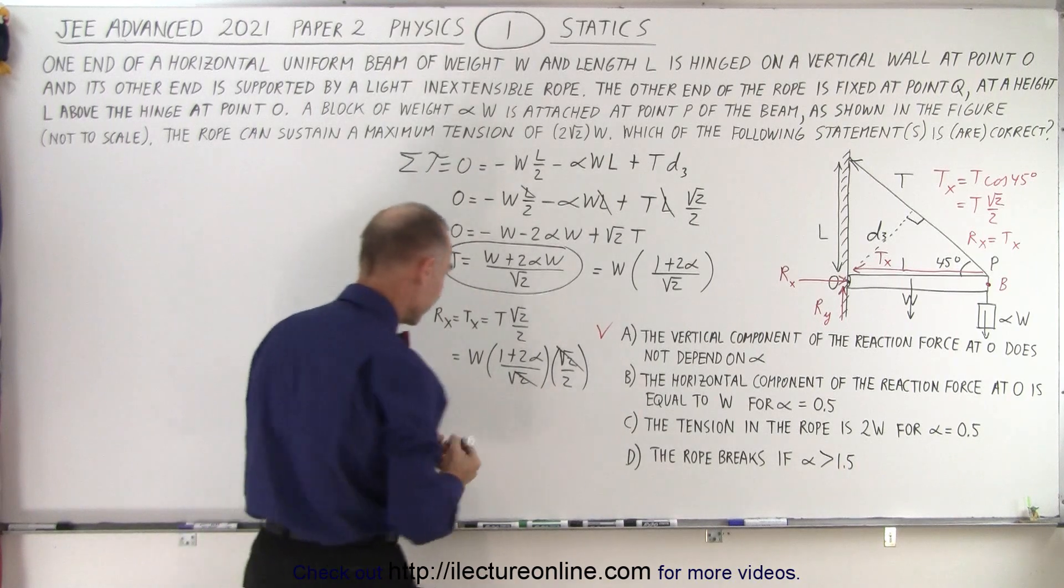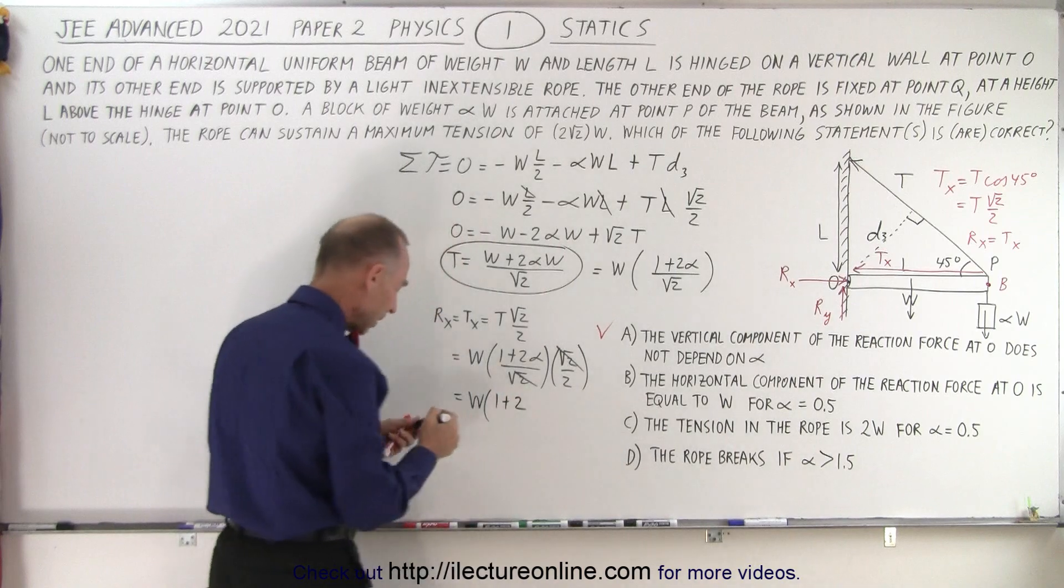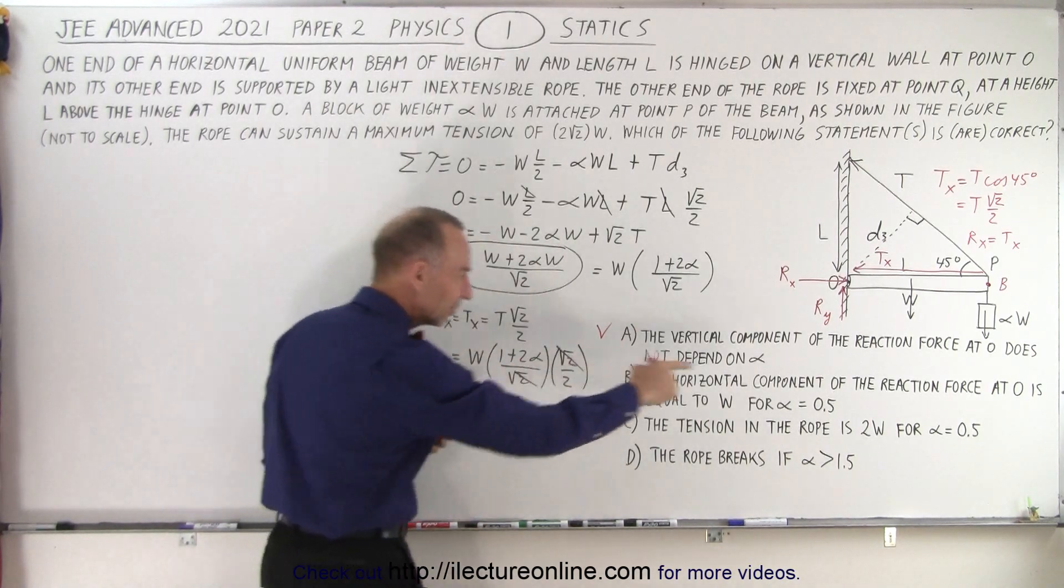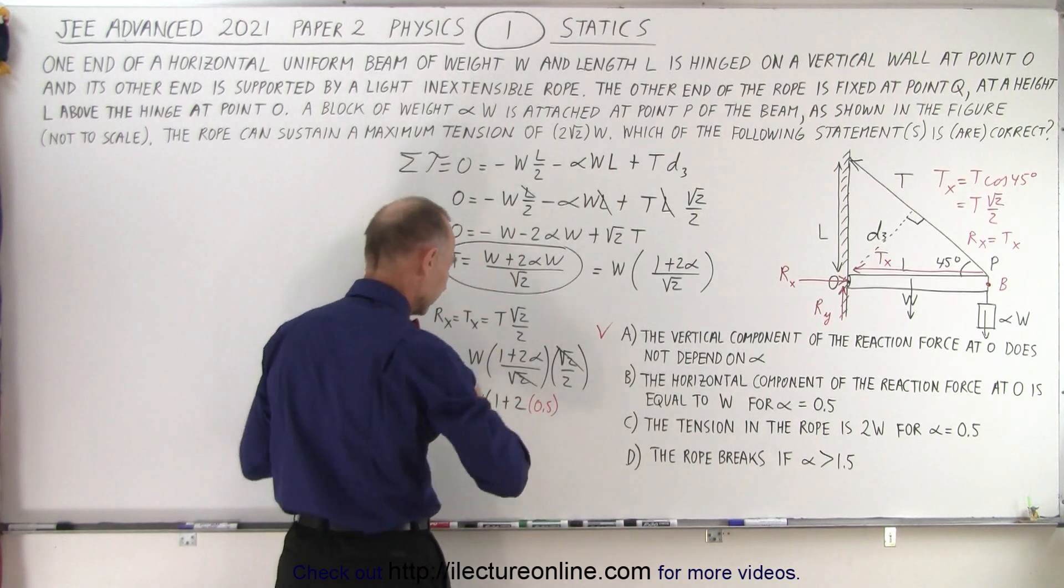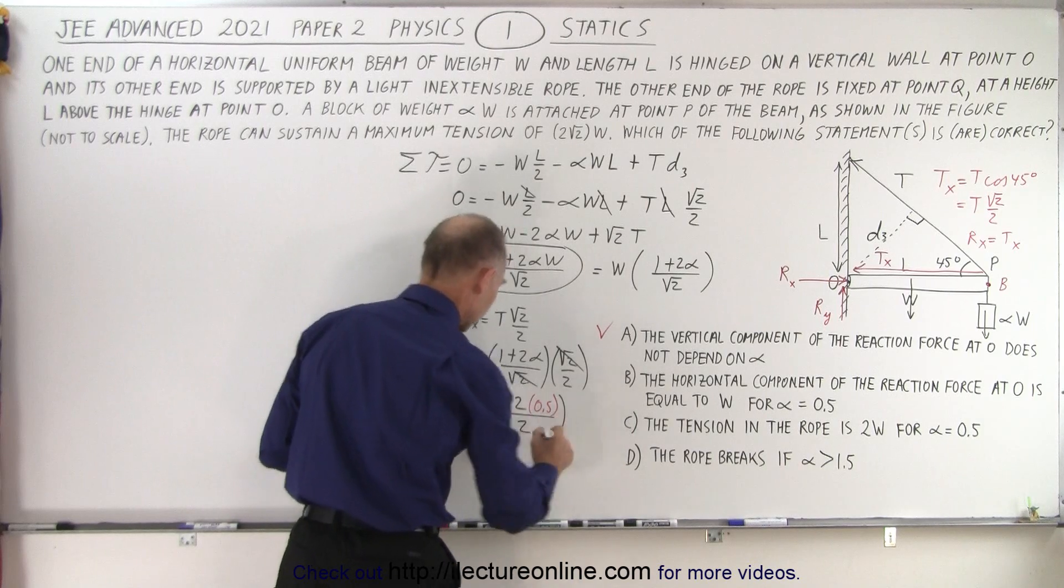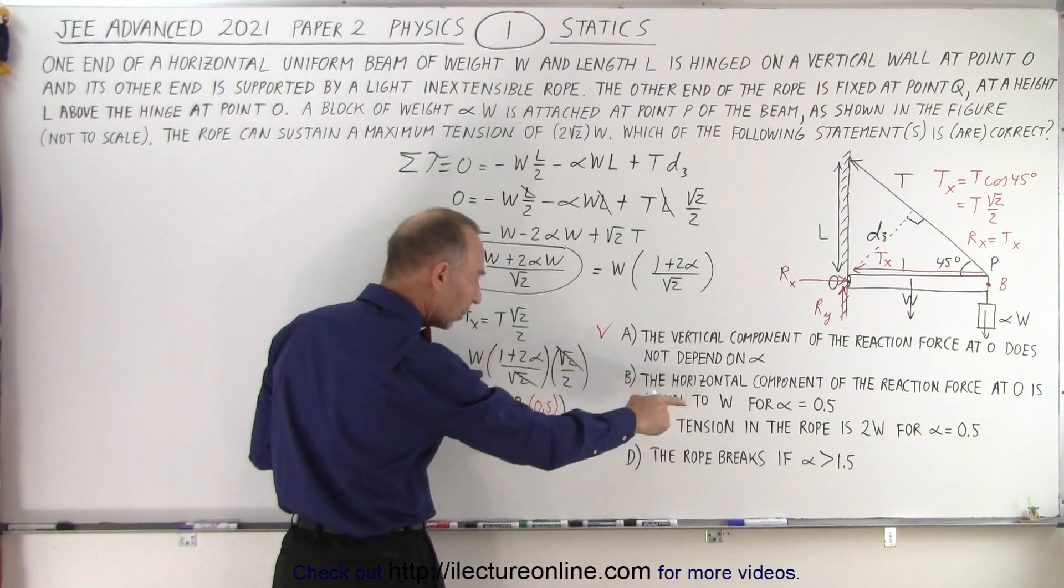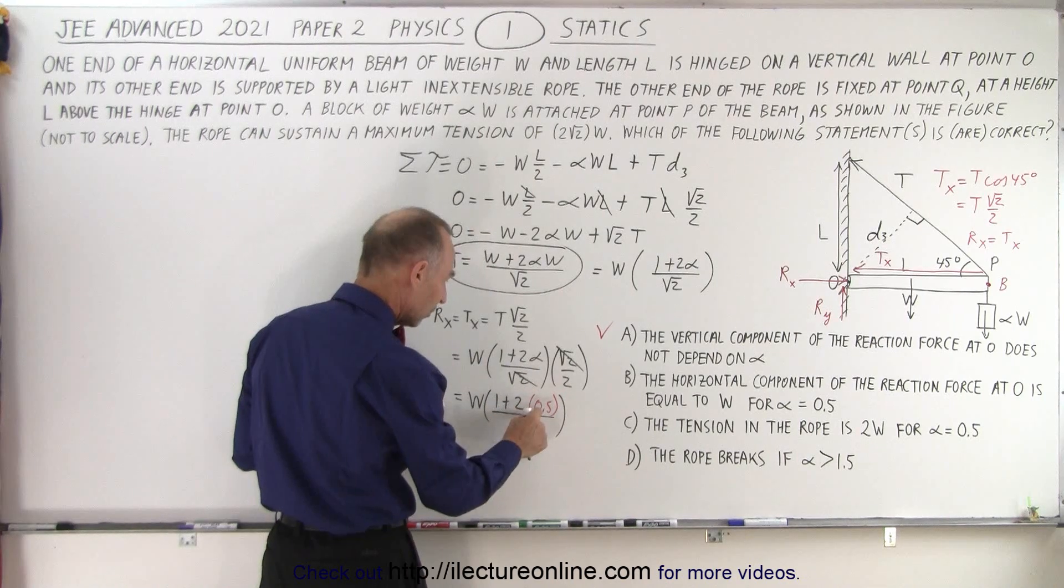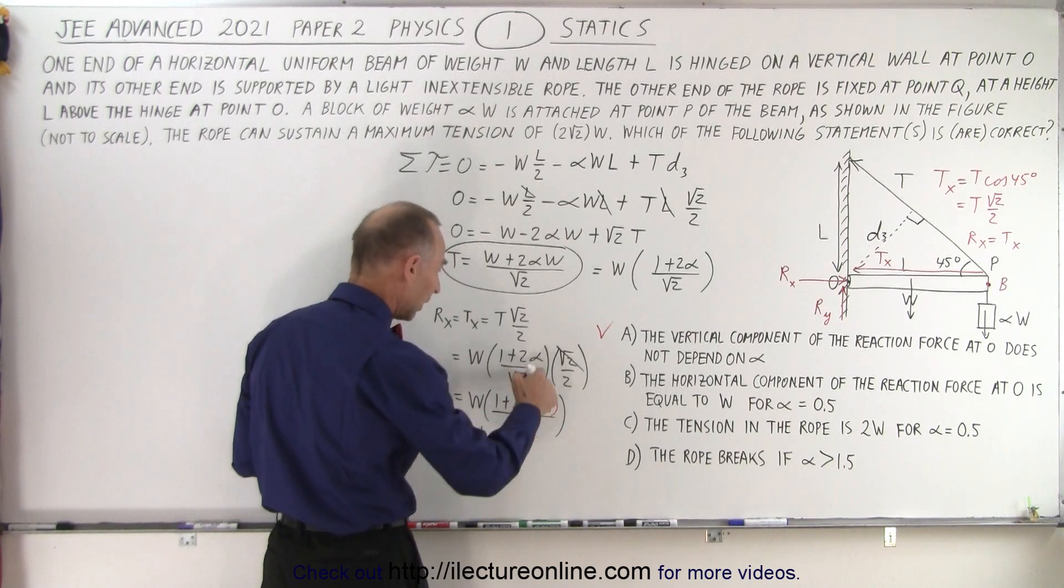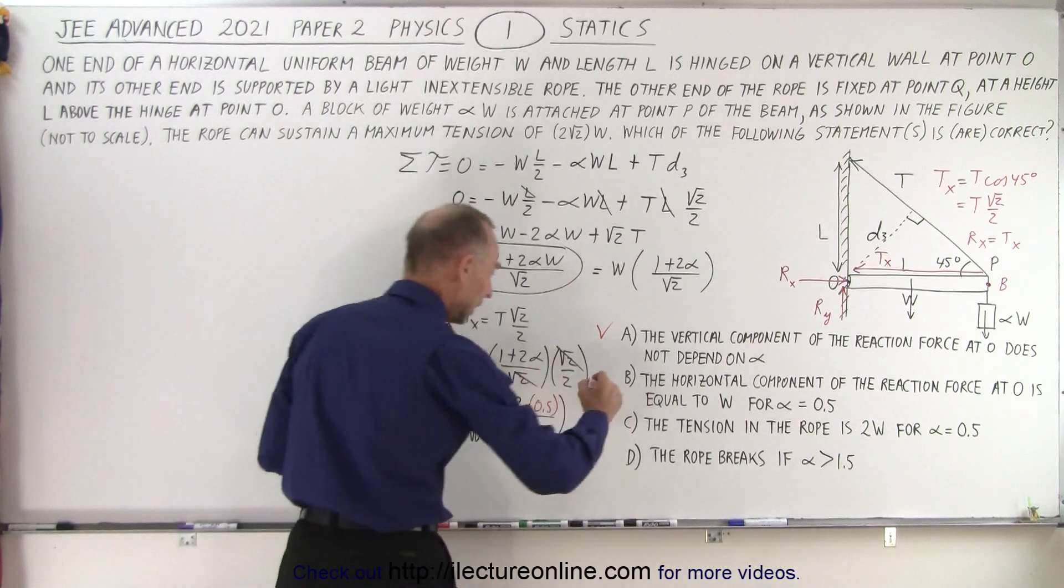Now let's substitute in there. This is equal to W times 1 plus 2 times alpha, and alpha is 0.5, divided by 2. So 2 times 0.5 is 1 plus 1 is 2 divided by 2 is 1. So this is indeed W if I replace alpha by 0.5. Therefore, that is also a correct statement.